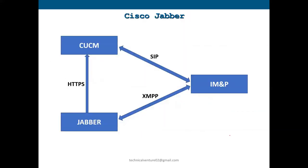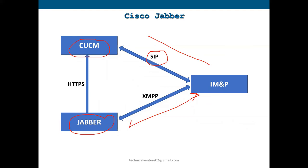Here's the communication flow: Jabber on your laptop sends HTTPS requests to CUCM. Communication between CUCM and IM and Presence is via SIP. Communication between Jabber and IM and Presence is via XMPP. The integration between CUCM and IM and Presence requires creating a SIP trunk between them.